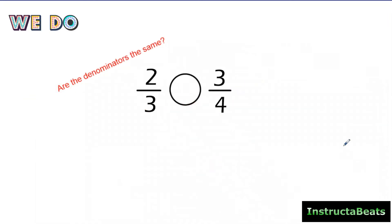Here's our we-do problem. We're going to be comparing two-thirds and three-fourths. If it was a word problem, maybe I ate two-thirds of a pizza, you ate three-fourths of the same-size pizza — who ate more? The first question we're always going to ask ourselves: are the denominators the same? Here I see I have three and four, so these are not the same.